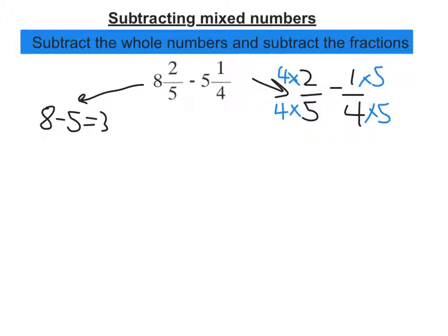Let's do that multiplication. 4 times 2 is 8. 4 times 5 is 20. Minus 1 times 5 is 5. 4 times 5 is 20. My denominator is the same, so I can take away the numerators. So 8 take away 5 is 3, so that's 3 twentieths.